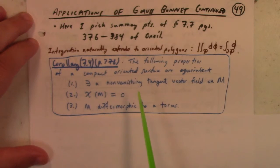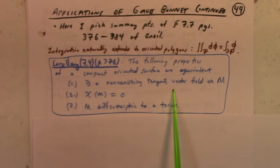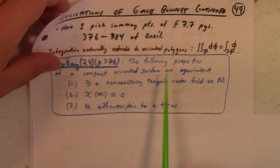Number one: there exists a non-vanishing tangent vector field on M. Two: the Euler characteristic of M is 0. Three: M is diffeomorphic to a torus. Let's go through these.